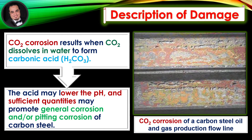Description of damage: Carbon dioxide CO2 corrosion results when CO2 dissolves in water to form carbonic acid. The acid may lower the pH and, in sufficient quantities, may promote general corrosion and/or pitting corrosion of carbon steel, as illustrated in the figure showing an example of CO2 corrosion of a carbon steel oil and gas production flow line.